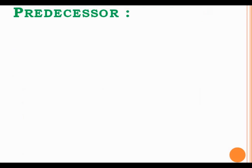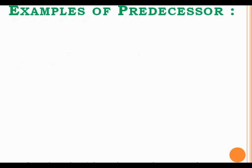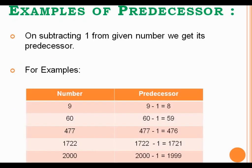Now, we will see the concept of predecessor. Look at the definition of predecessor. A number that comes before a given number is called the predecessor of a given number. For finding out the predecessor of a given number, we just have to subtract 1 from the given number, and we get its predecessor.